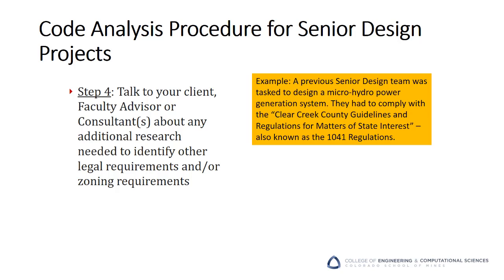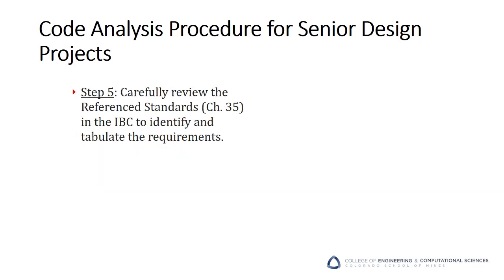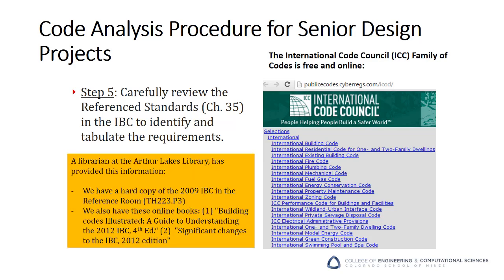An example of these types of other requirements: a previous senior design team was tasked to design a micro-hydro power generation system. They had to comply with the Clear Creek County guidelines and regulations for matters of state interest, also known as the 1041 regulations. After you've completed this process, you may find that state requirements conflict with some local requirements. If that happens, you should constrain yourself with the most stringent of the two requirements. Once the required codes are clearly identified, you'll need to review the reference standards that the code points to. The ICC family of codes is free and available online.